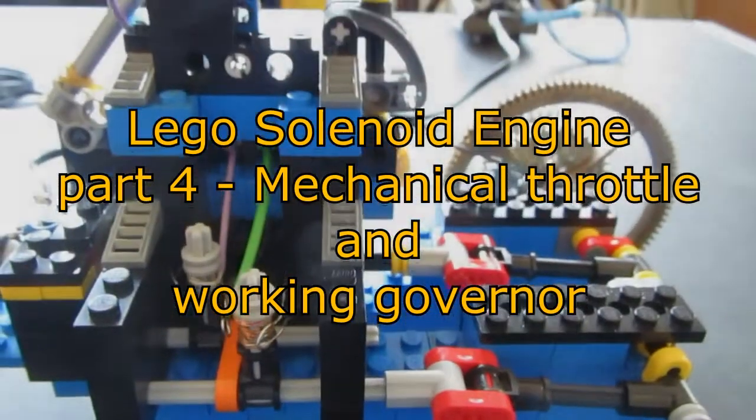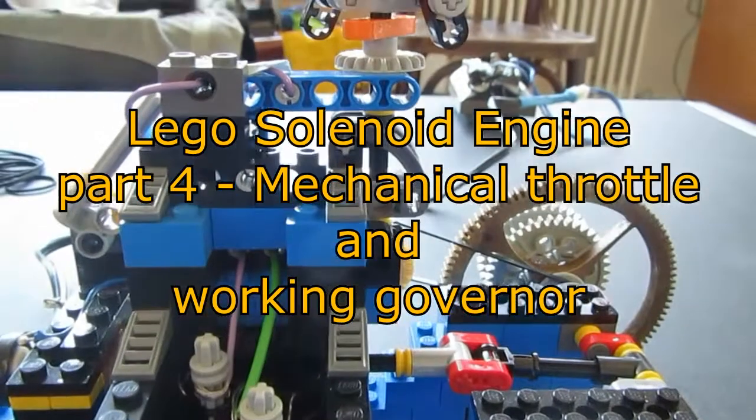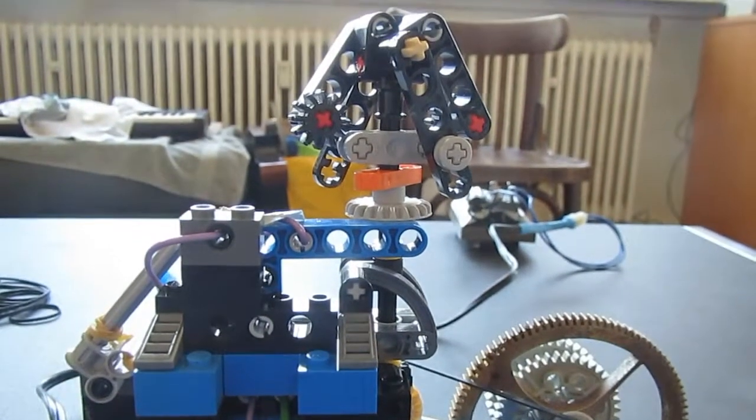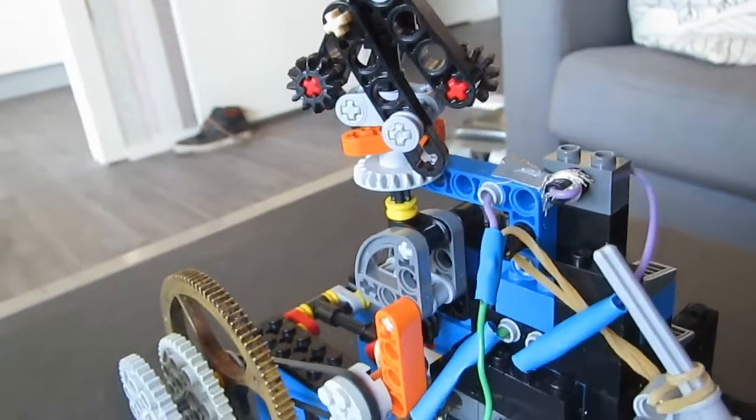Lego solenoid engine part 4: mechanical throttle and working governor. Now that I have a basis for the engine that works well, it's time to add some throttle control. This will be in the form of a ball governor.